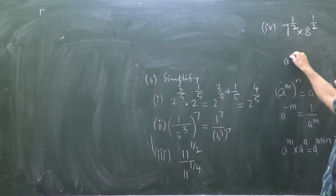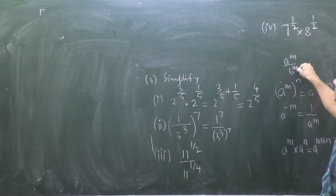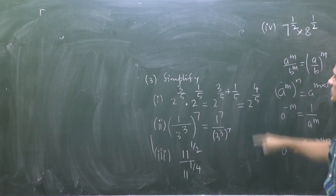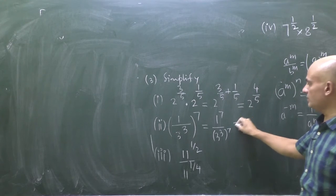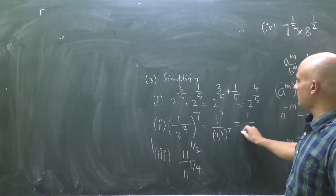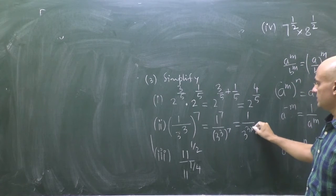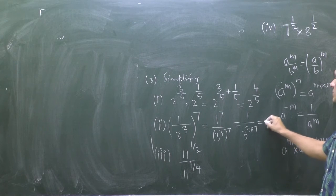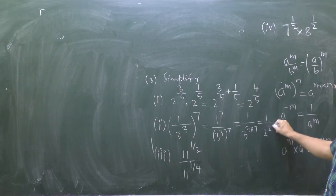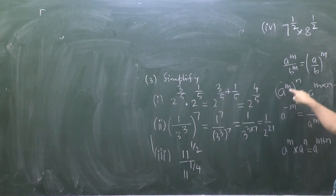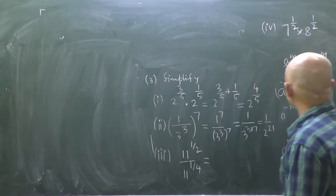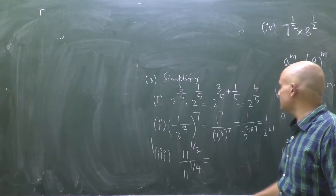For the next part, we have 1^7 upon 3^7. The rule used here is a^m / b^m = (a/b)^m, giving (1/3)^7. Then 1 to the power 7 is 1, and using (a^m)^n = a^(m×n), 3 to the power 3 × 7 = 3 to the power 21. So the answer is 1 / 3^21.